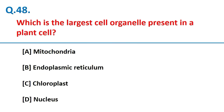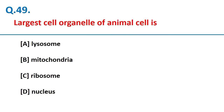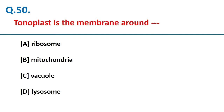The largest organelle in a plant cell is the vacuole, followed by the nucleus, then the plastid. If vacuole is given as an option, choose it first. The largest organelle in an animal cell is the nucleus. Tonoplast is the membrane surrounding the vacuole.